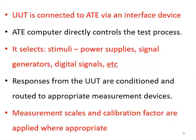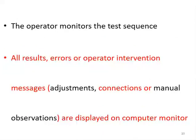The responses — signals detected from the unit under test — are conditioned and routed to the appropriate measurement device. The ATE can measure current, voltage, frequency, distortion, and many things. When a signal is detected from the unit under test, it is directed to the proper measurement segment. The operator monitors the test sequence, checks the display for results, checks for errors, and makes any needed adjustments.